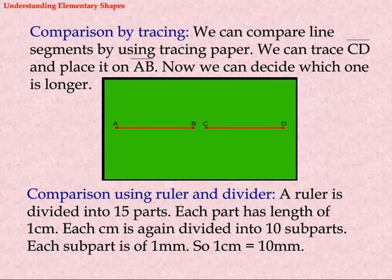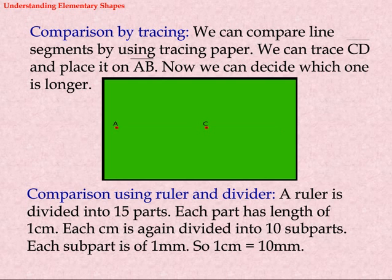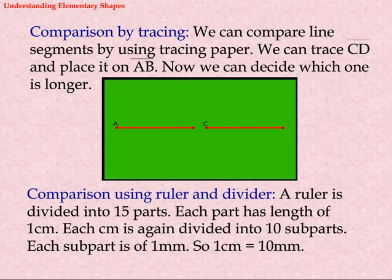Comparison using ruler and divider. A ruler is divided into 15 parts. Each part has a length of 1 cm. Each cm is again divided into 10 sub-parts. Each sub-part is of 1 mm. So 1 cm equals 10 mm.